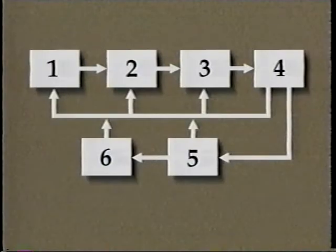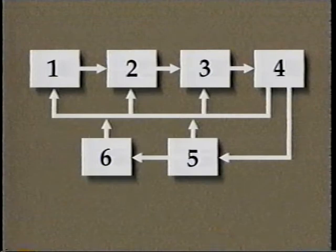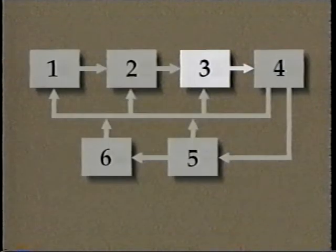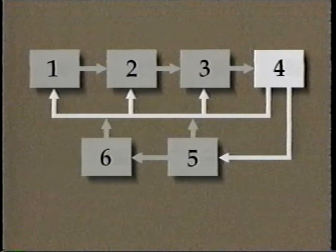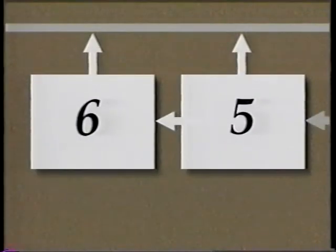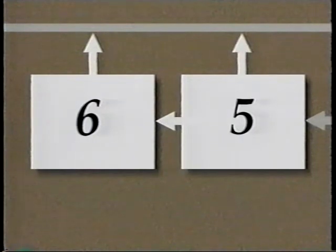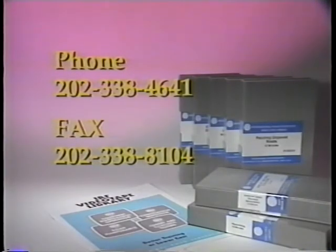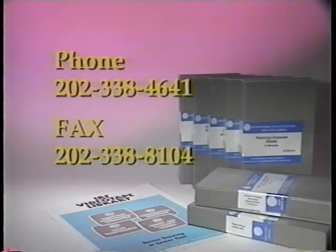In this program, Bill Greinke has worked his way through the third and fourth phases of the Highway Safety Improvement Program process — evaluating alternatives and selecting improvements, and developing and implementing the program. In the next program of this series, Evaluating Safety Program Results, we will cover the final two phases. For more information on this or other IRF videotapes, write to the International Road Federation or call the numbers on your screen.